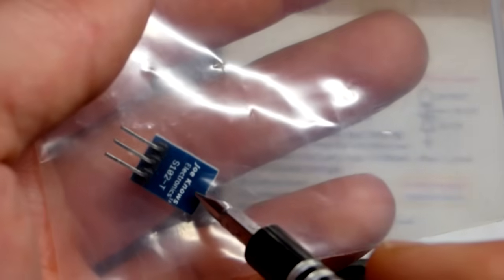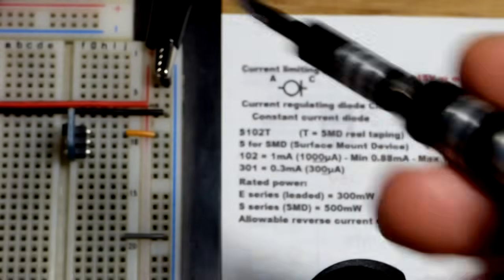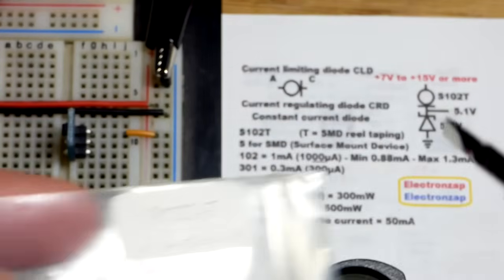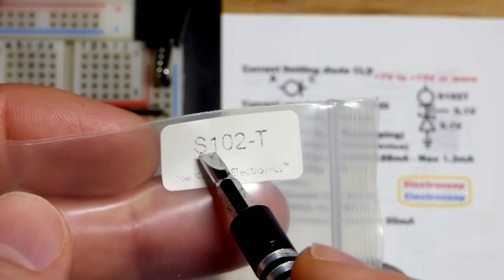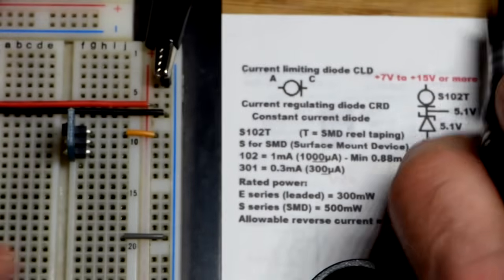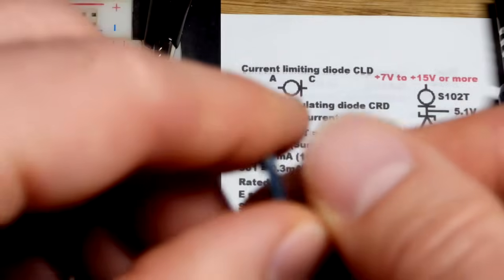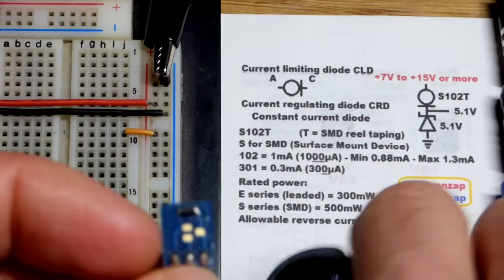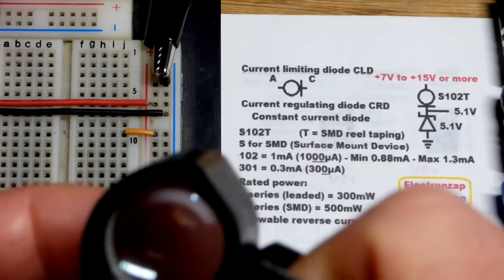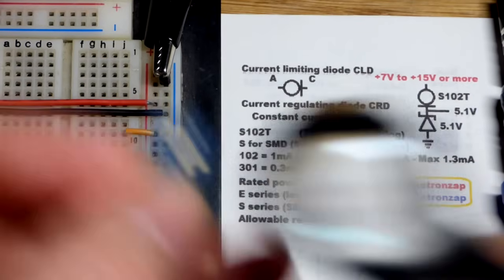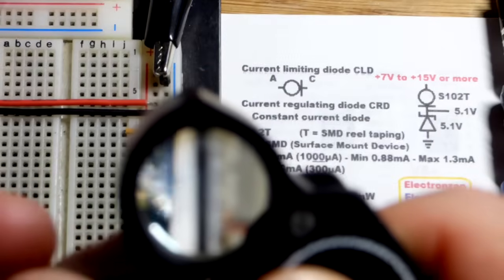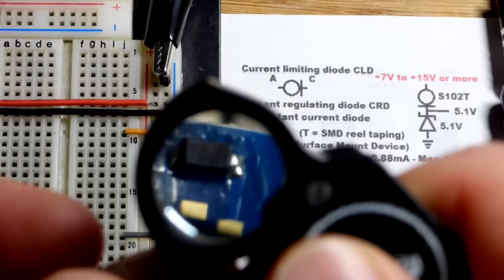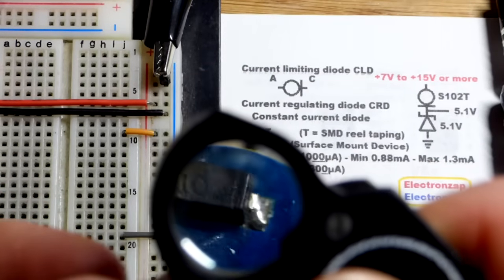In any case, it's actually a surface mount component, so I got this from the Joe Knows Electronics semiconductor kit a long time ago. They may look different but that is the component right there. I was hoping the light was in a better spot, we'll move it.